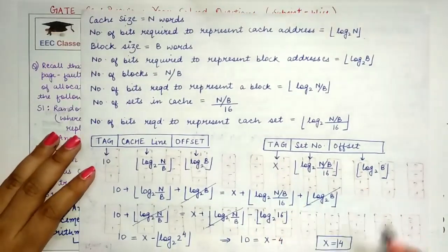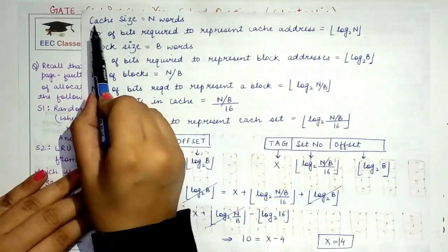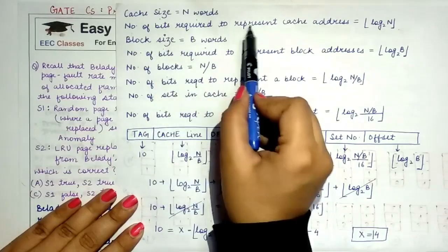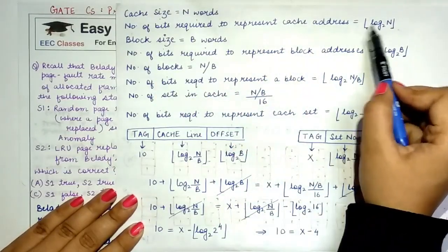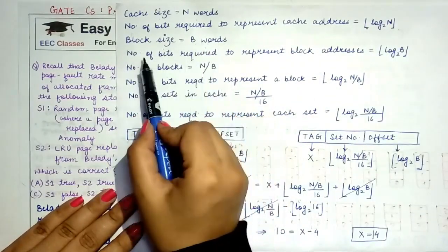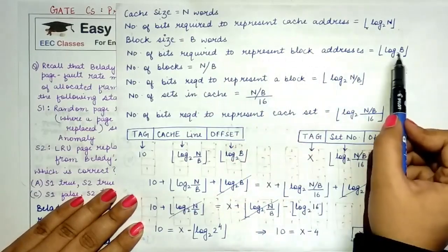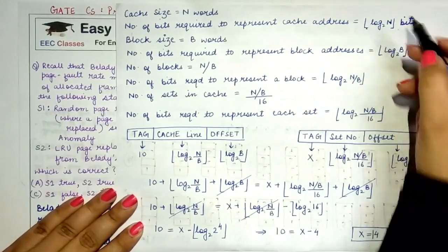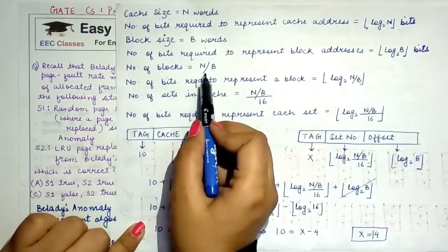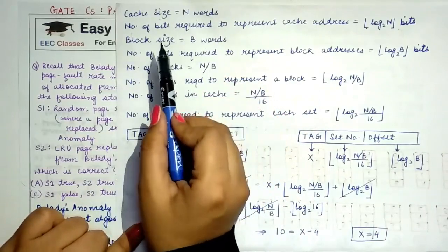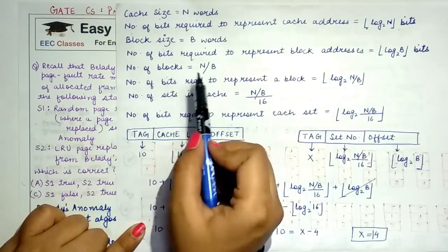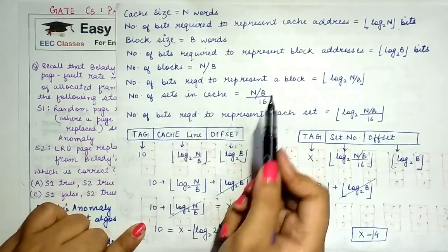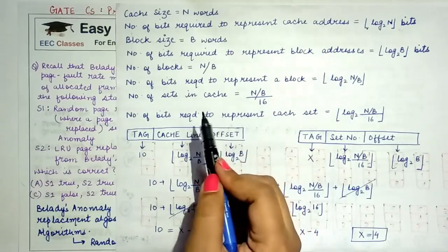For a thorough explanation: if cache size is N words, each address requires ⌊log₂N⌋ bits. Block size is B words, so each block offset requires log₂B bits. The number of blocks in the cache is N/B, and the number of bits to represent each block is log₂(N/B).